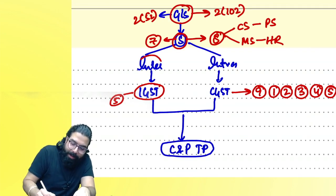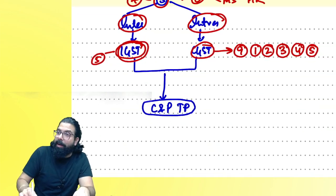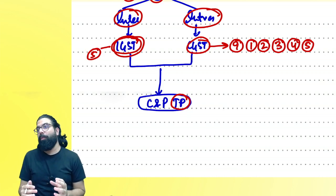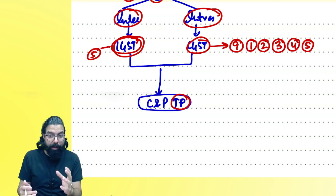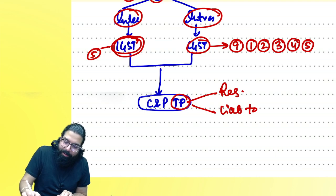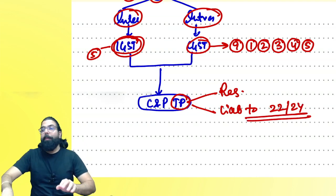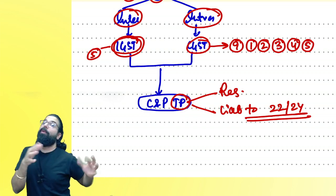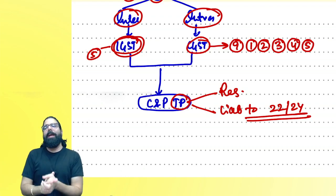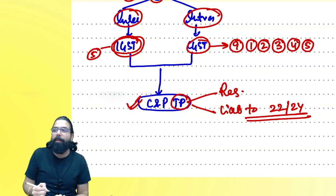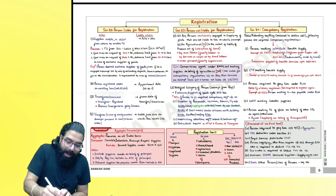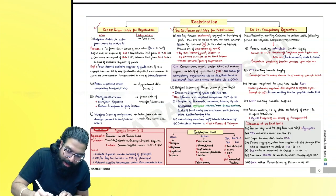Whenever goods or services are supplied — interstate attracts IGST, intrastate attracts CGST. Once GST is levied, it is to be collected and paid by a taxable person. A taxable person is a person who is registered or who is liable to be registered under section 22 or 24. If you are liable to register but don't take registration, you still have to pay GST from your own pocket.